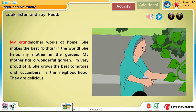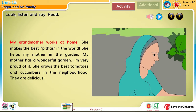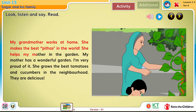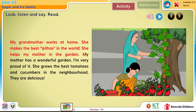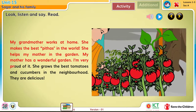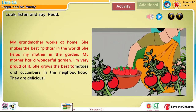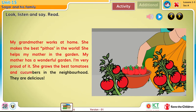My grandmother works at home. She makes the best pitas in the world. She helps my mother in the garden. My mother has a wonderful garden. I'm very proud of it. She grows the best tomatoes and cucumbers in the neighborhood. They're delicious.